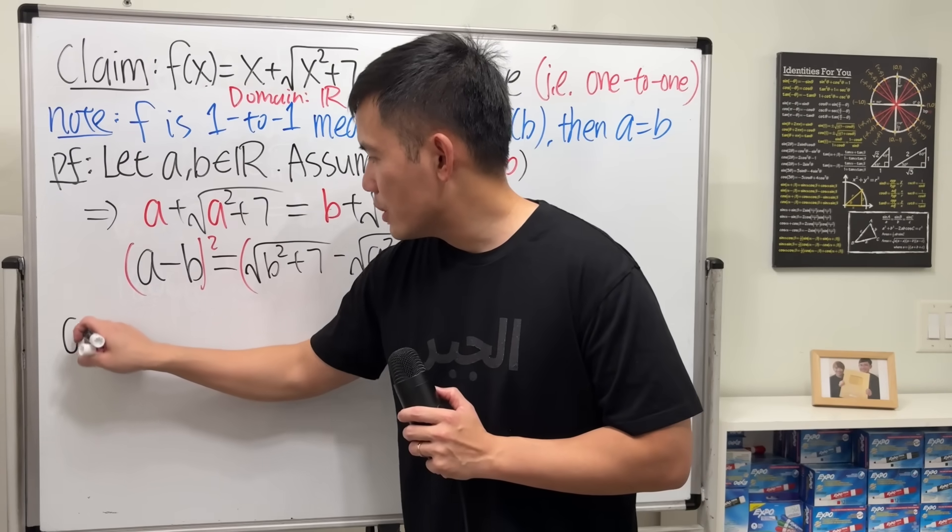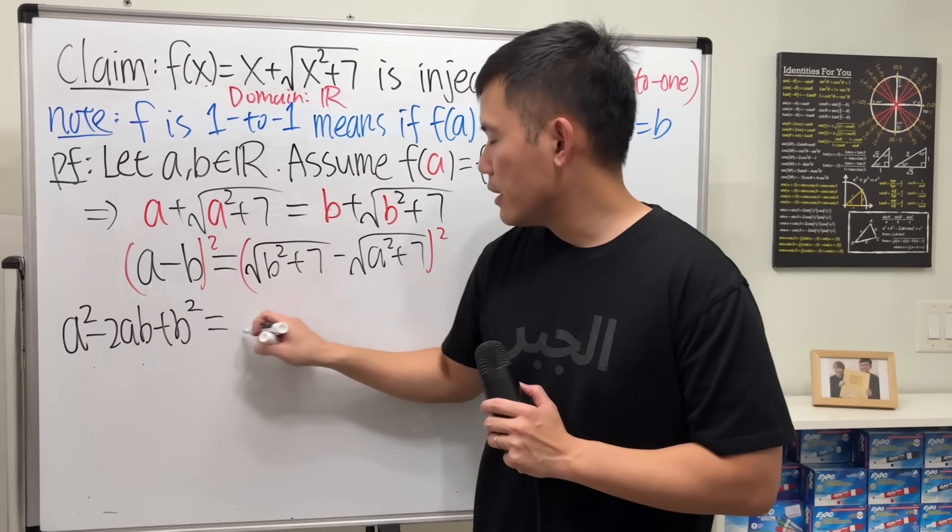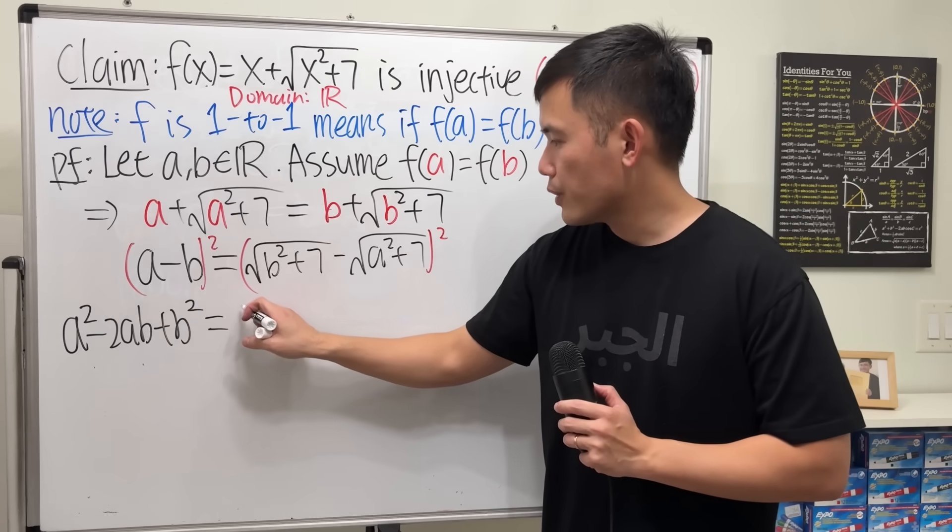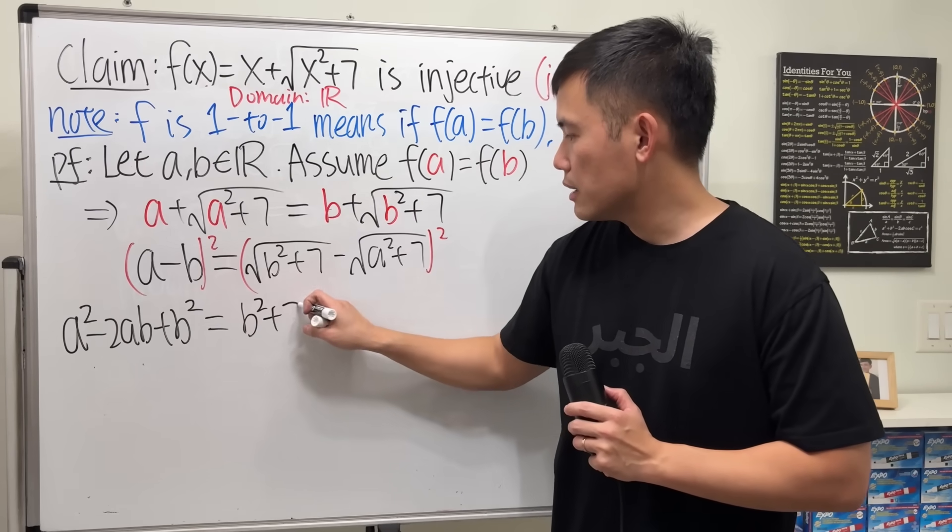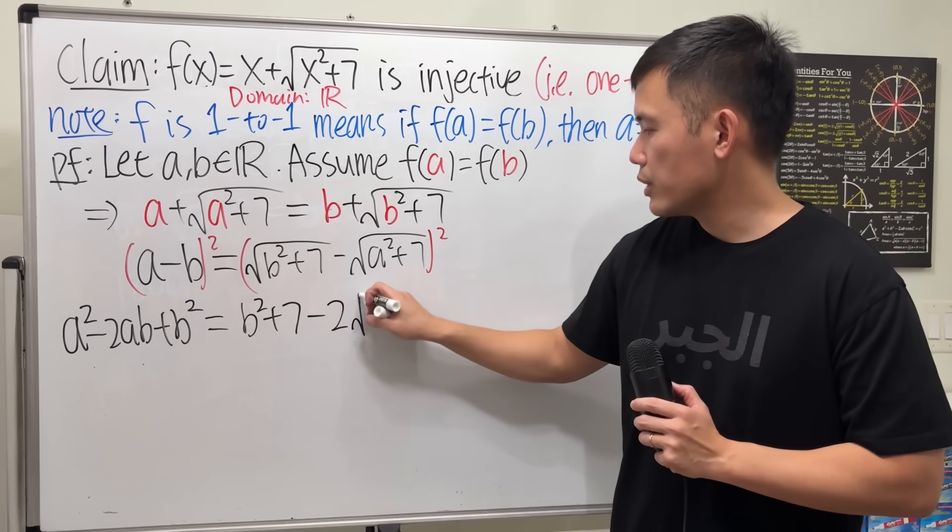On the left-hand side, if I expand it, that's a squared minus 2ab plus b squared. On the right-hand side, if we expand it, we square the first term, which is just the inside. Minus 2 times this and that, so 2 square root.